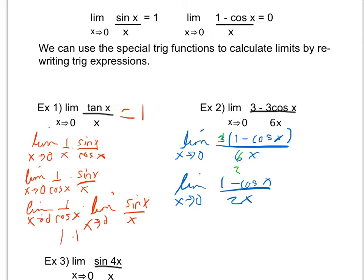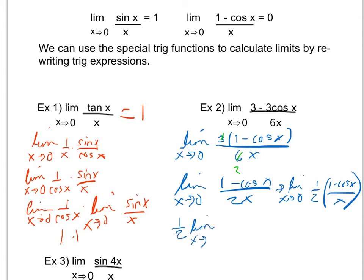I reduce the three and six to get the limit as x approaches zero of one minus cosine of x over two x. The two in the denominator is the same as multiplying by one half, so this becomes one half times the limit as x approaches zero of one minus cosine of x over x. Using the scalar multiple property, I pull the one half out front. I recognize this as the special formula, which equals zero. So the overall limit is one half times zero, which is zero.